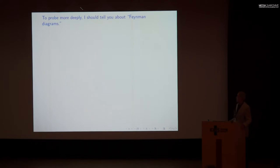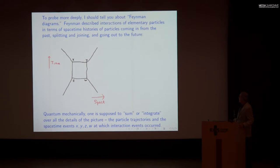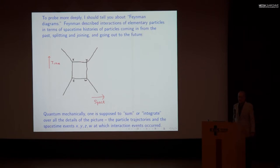To probe more deeply into this, I should tell you about Feynman diagrams. Richard Feynman was the famous physicist who spent most of his career at Caltech, perhaps the most famous physicist of the second half of the 20th century, and his single greatest discovery was Feynman diagrams. Feynman described the interactions of elementary particles in terms of space-time histories of particles coming in from the past, splitting and joining, and going out to the future. In this schematic drawing, time runs vertically and space runs horizontally, and a line represents the path of a particle through space and time. According to Feynman, we allow branching and joining events where one particle comes in and splits into two, or two particles recombine into one.